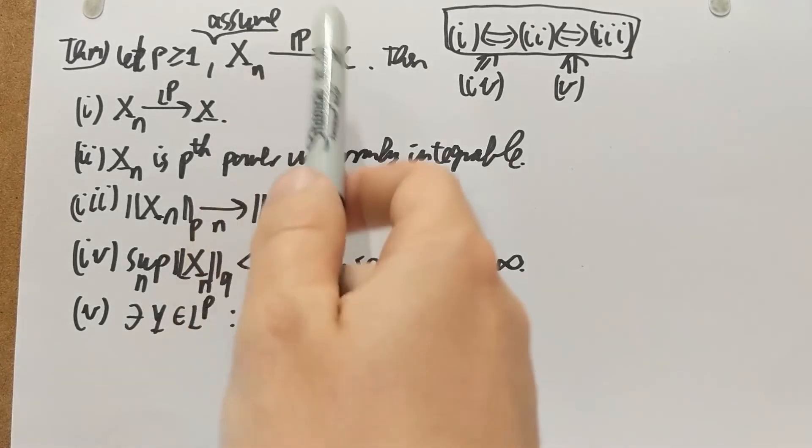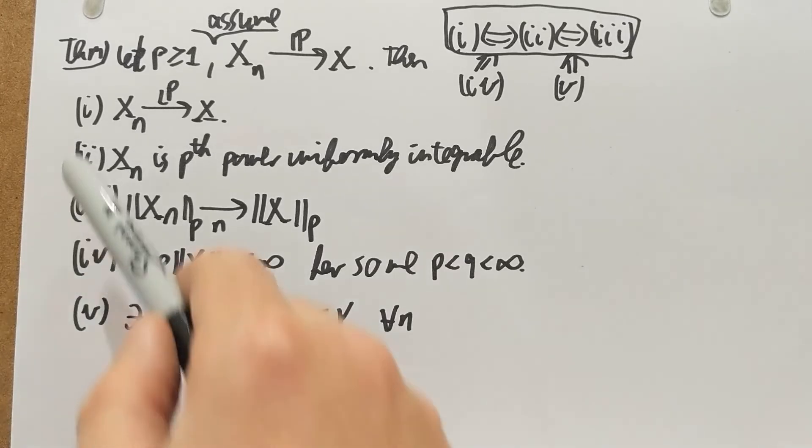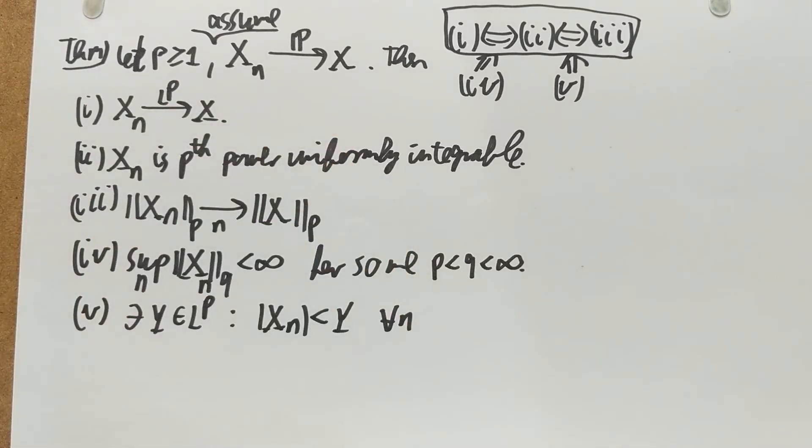And then if we have in probability convergence, then being bounded in lq for some q larger than p, or having a bounding random variable in lp, each imply any of these three, one, two or three. Okay, that's the content of this theorem.